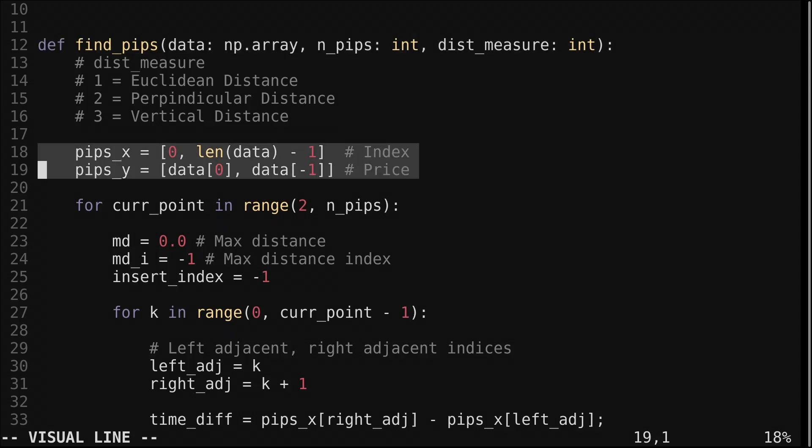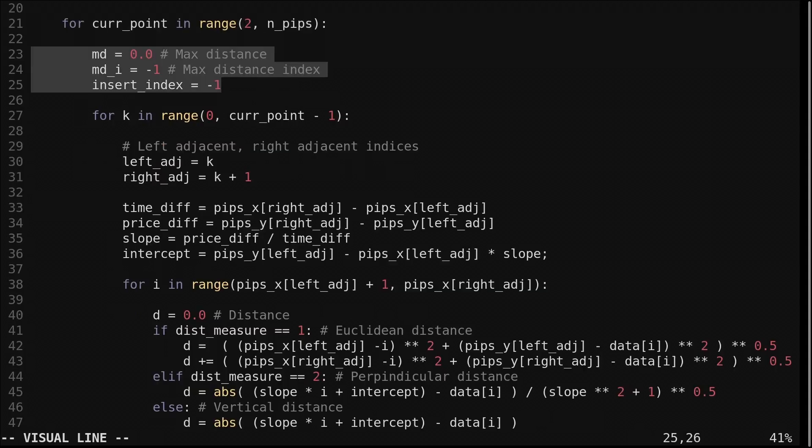We record the index and prices of the selected points in pips_x and pips_y respectively. We initialize them with the first and last points. This outer loop selects each point until we reach the specified number. We create variables for tracking the max distance found.